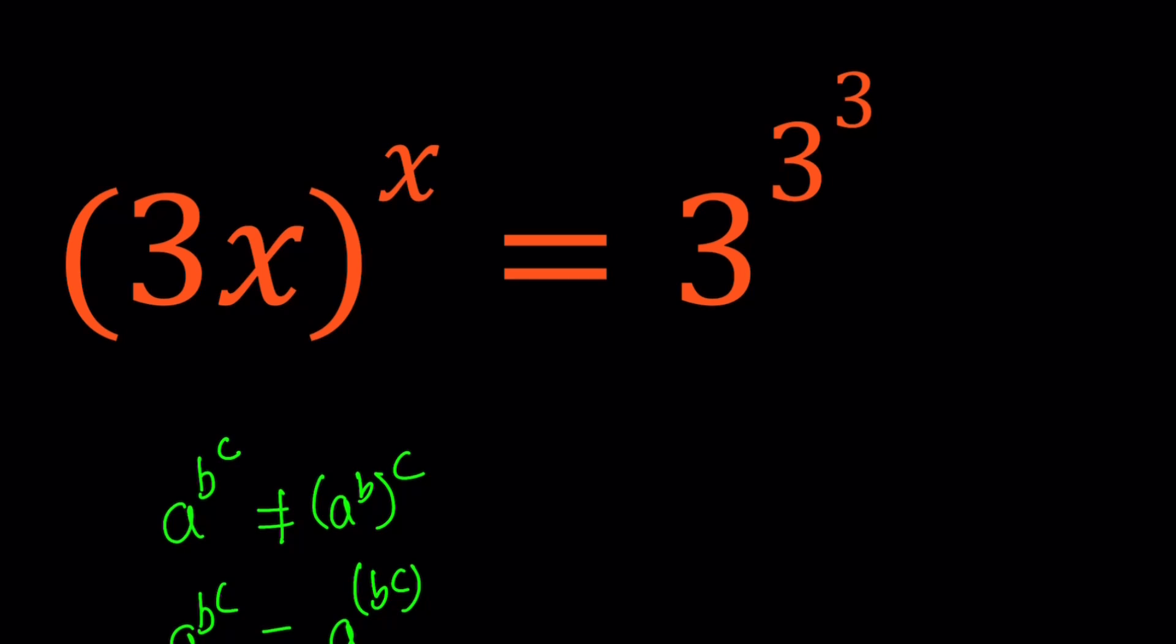So how do we simplify this expression? We said that 3 to the power 3 must be grouped together, so this should give us 3 to the power 27. Let's rewrite it: (3x)^x equals 3^27.